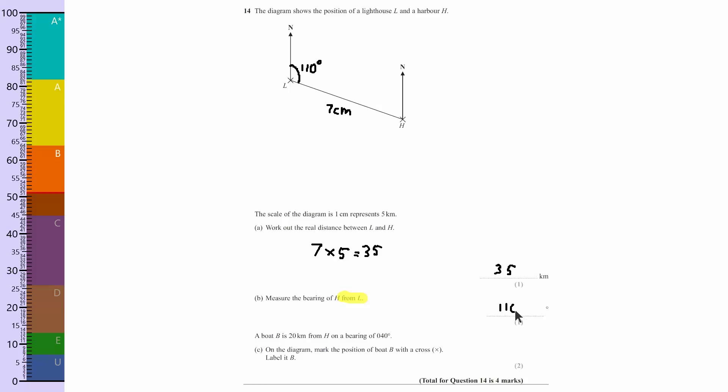Okay, it says a boat B is 20 kilometers from H on a bearing of 40 degrees. On the diagram, mark the position of boat B. Okay, so from H - first of all we just highlight that 'from H' so we're at H, so we're here, and the boat is a bearing of 40 degrees.